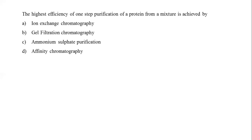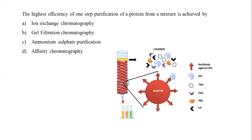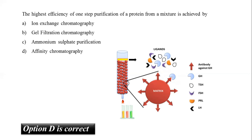The next question: highest efficiency one-step purification of protein from a mixture is achieved by which method? Options are ion exchange chromatography, gel filtration chromatography, ammonium sulfate purification, and affinity chromatography. An ideal purification strategy achieves the highest purification in fewest steps. Affinity chromatography is a single-step purification method separating biochemical mixtures based on highly specific binding interactions between an immobilized ligand and its binding partner. The correct answer is option D, affinity chromatography.